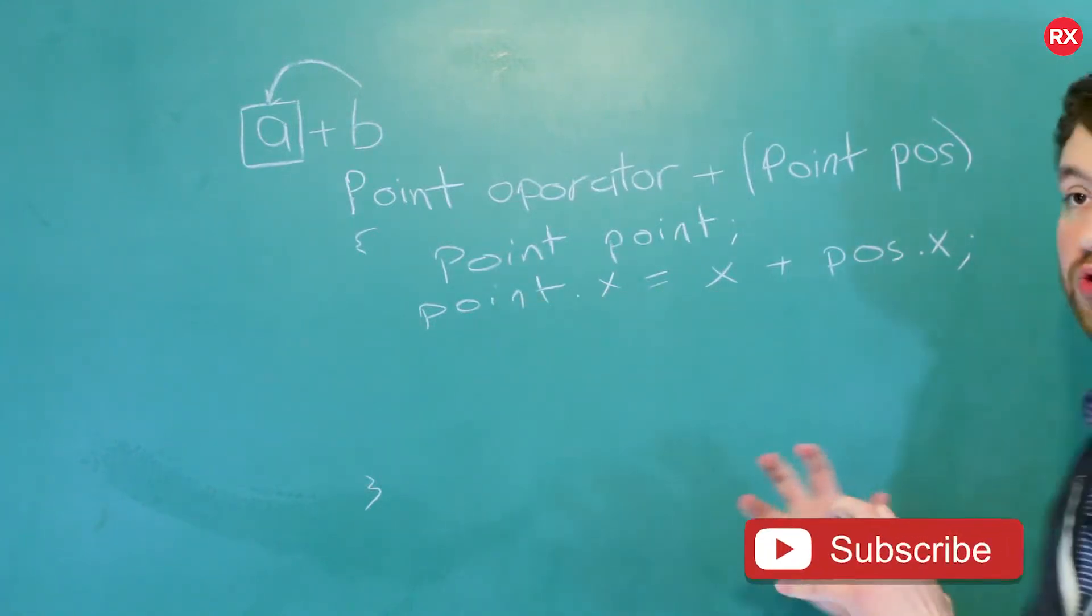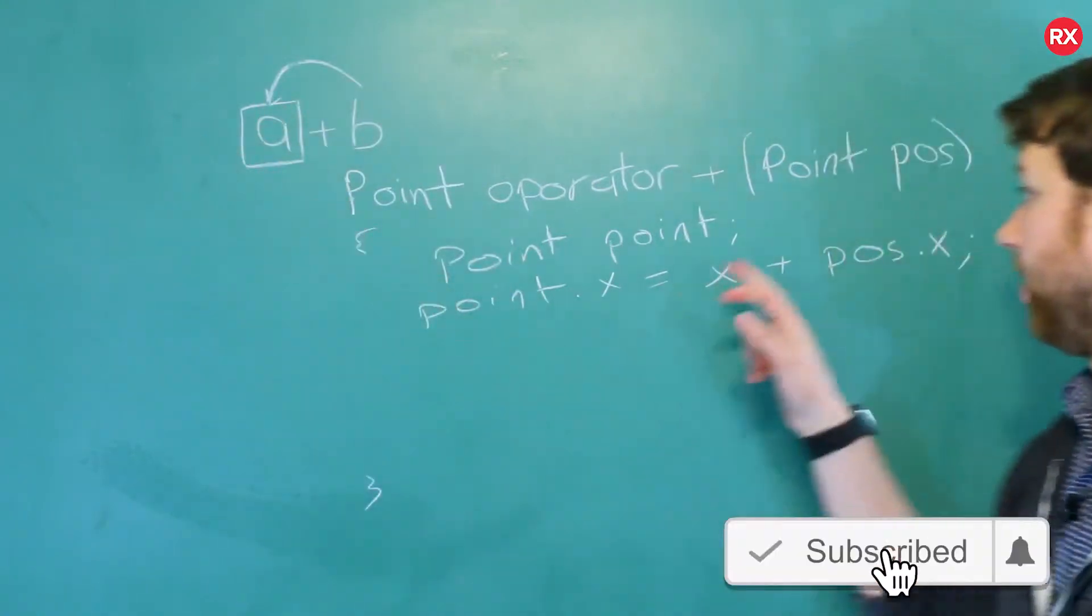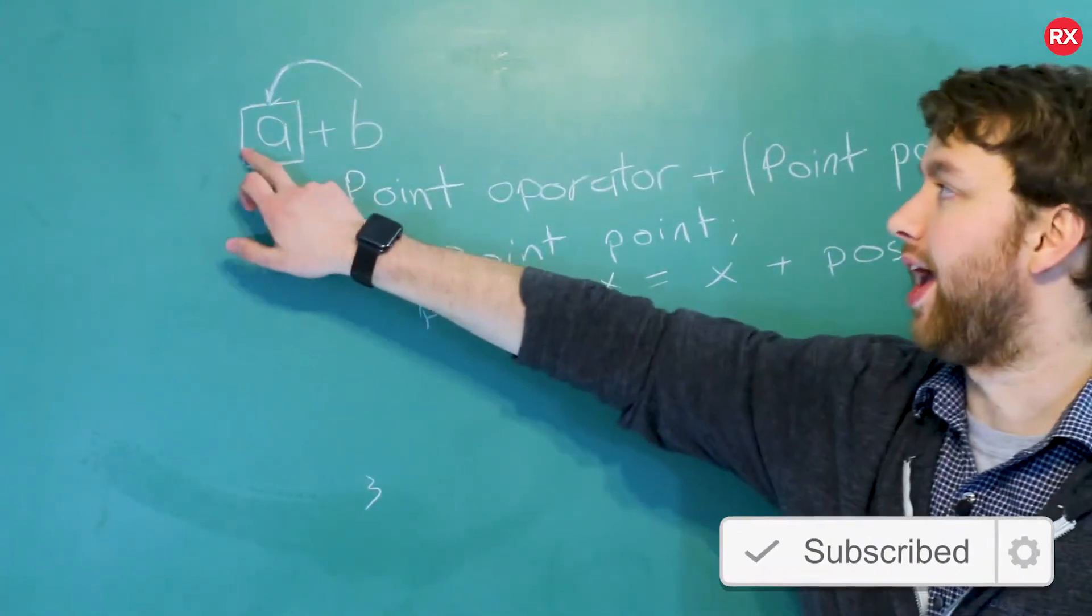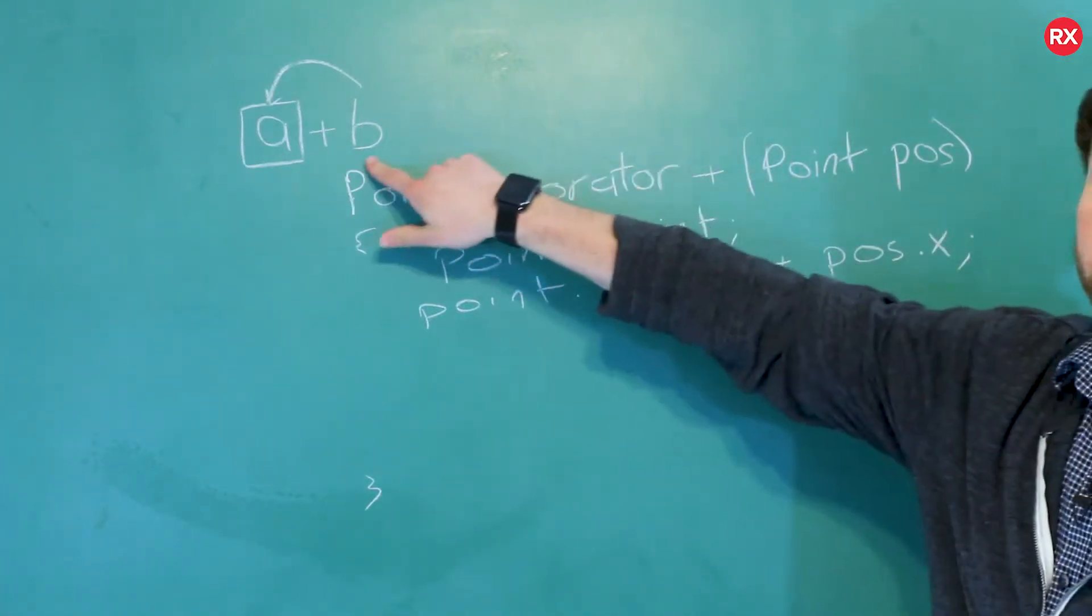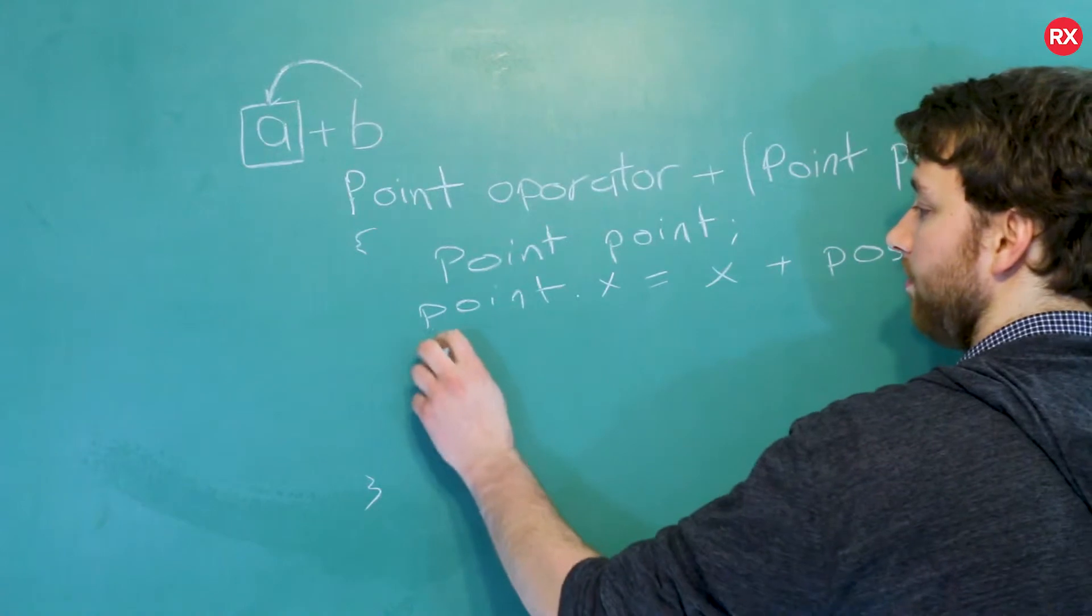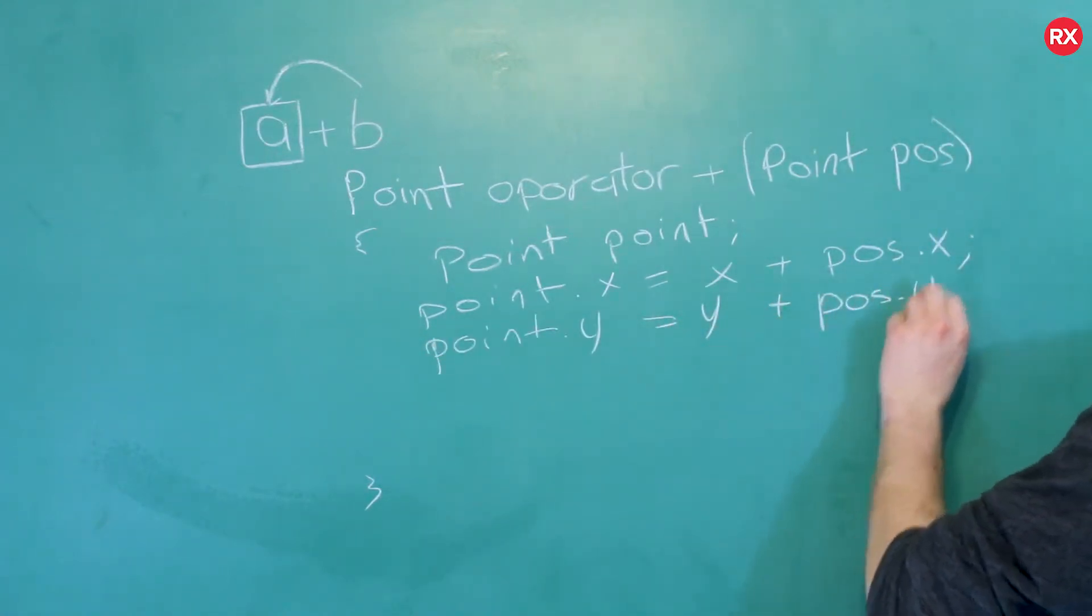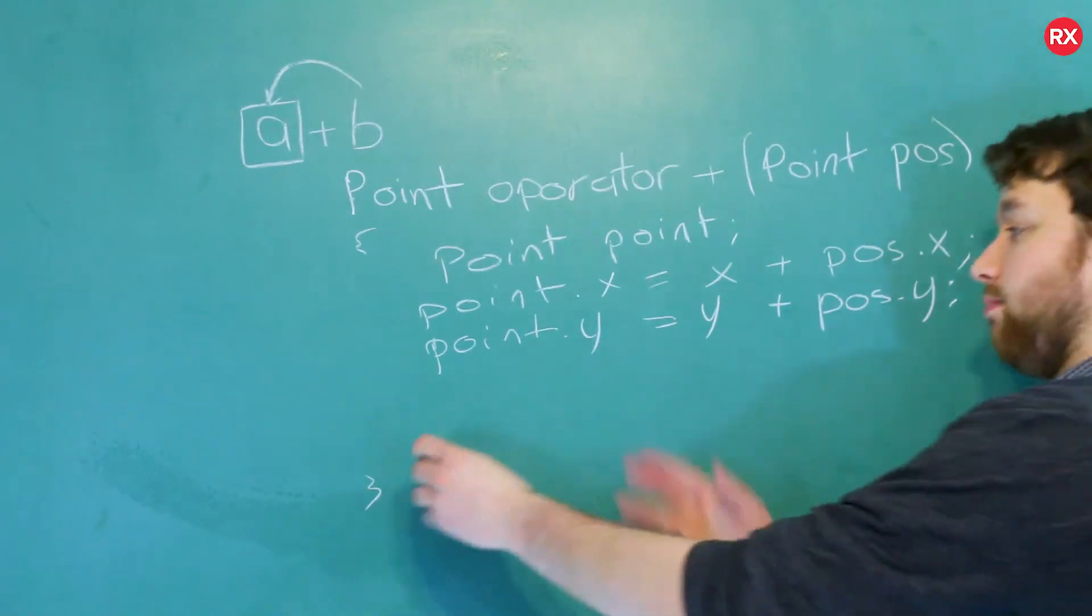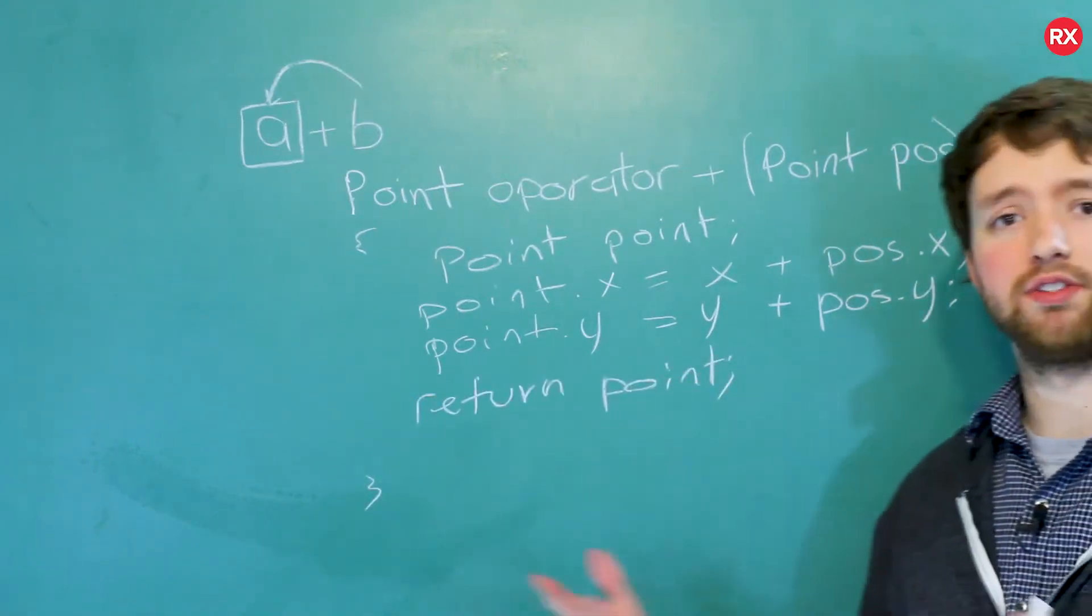Now this can be a little bit confusing because there's a lot of X's here. Point dot X refers to the result, what we're trying to get once we add these together. The X here refers to A. Now pose dot X is coming in as an argument, which is B. Then we do it again for Y and we say Y plus pose dot Y. And then once we're done, we got that point made. We just return it. And bada boom, bada bang, we just overloaded this operator.